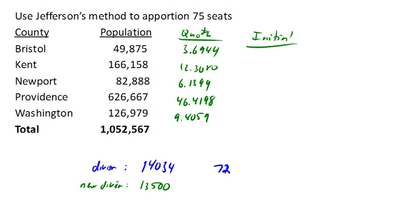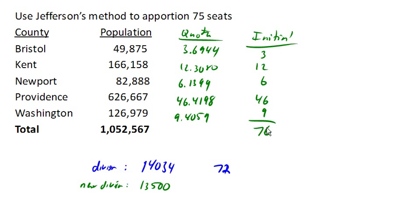So with our new quotas, we now have our allocations, which if we add those up, add up to 76. Uh-oh. This is a problem because this means we allocated too many seats — we only had 75 seats to allocate.